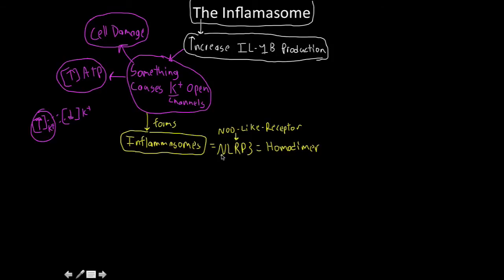The formation of this homodimer results in the binding of an adapter protein. Yes, NLRP3 is a NOD-like receptor that forms a homodimer, but what makes it unique is that it doesn't have a CARD domain. So it needs this adapter protein to come in, and this adapter protein has with it a CARD domain.